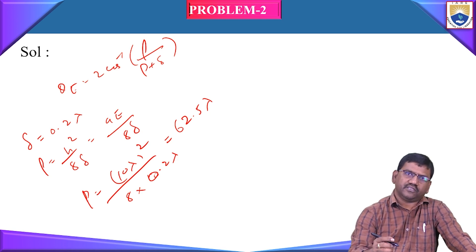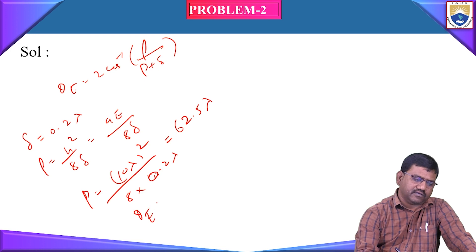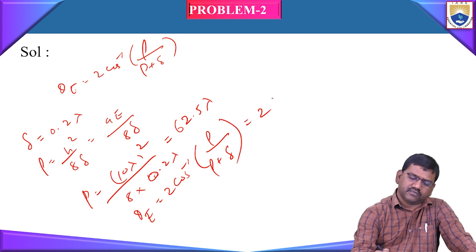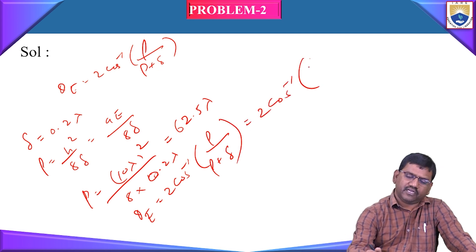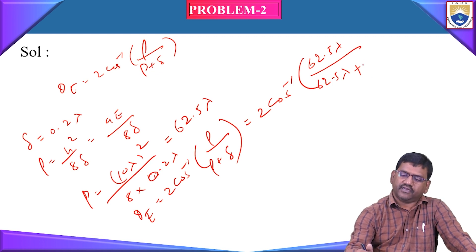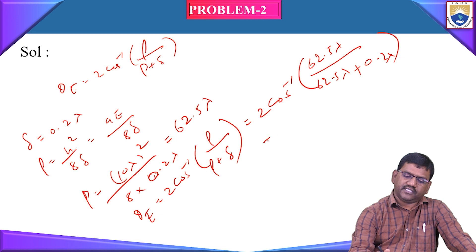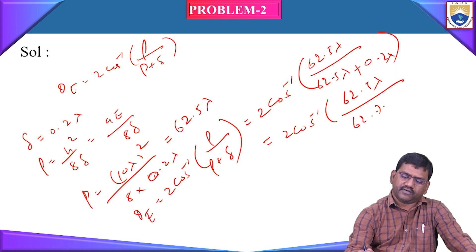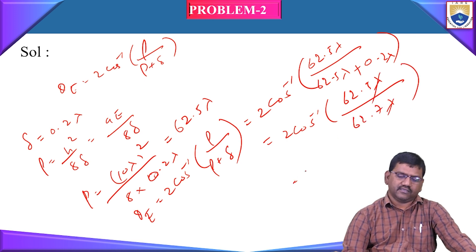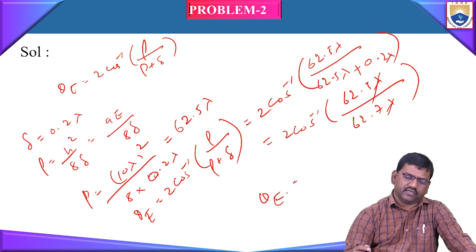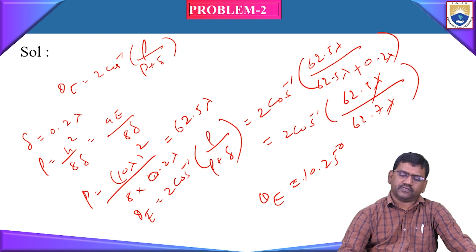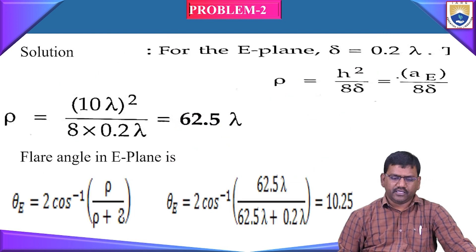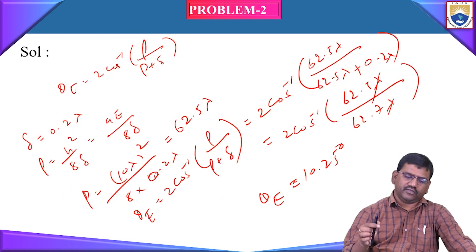Now we find the flare angle theta_e. Theta_e = 2 cos⁻¹(ρ / (ρ + δ)) = 2 cos⁻¹(62.5 lambda / (62.5 lambda + 0.2 lambda)) = 2 cos⁻¹(62.5 / 62.7). Simplifying, the lambda terms cancel and we get theta_e = 10.25 degrees.